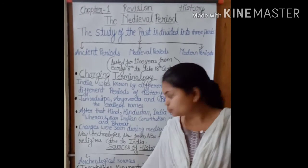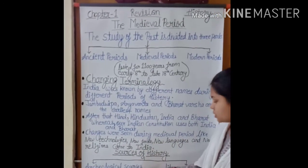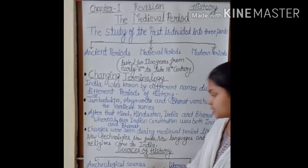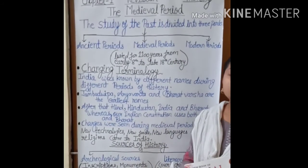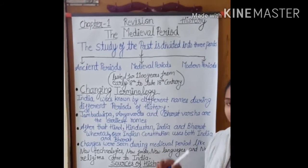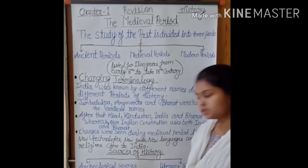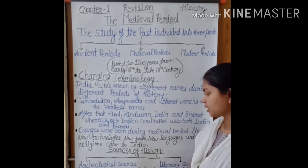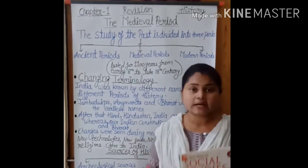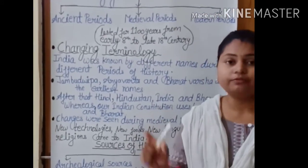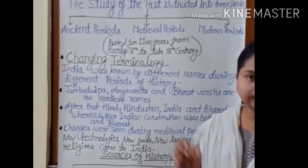Archaeological sources, or Puratattva sources, are the direct sources of history available to us in material remnants — that is, what is available to us in material form. Examples of archaeological sources are inscriptions, monuments, coins, paintings, and sculptures. Inscriptions, or Shilalekh, are pieces of writing carved on rock or a pillar — any text engraved on a rock or pillar is an inscription.